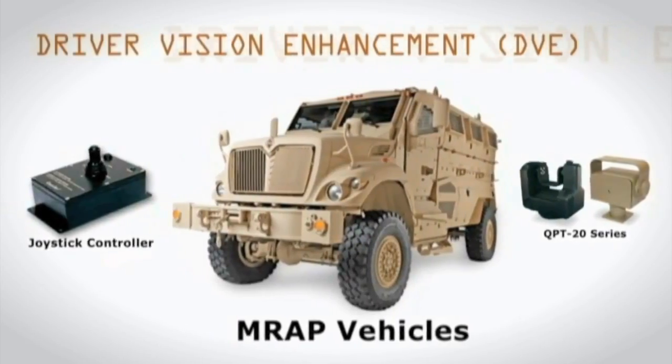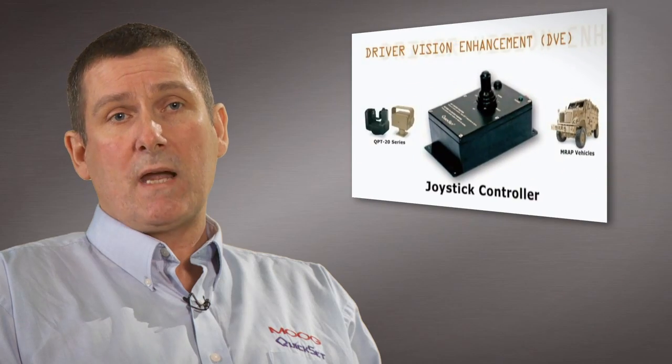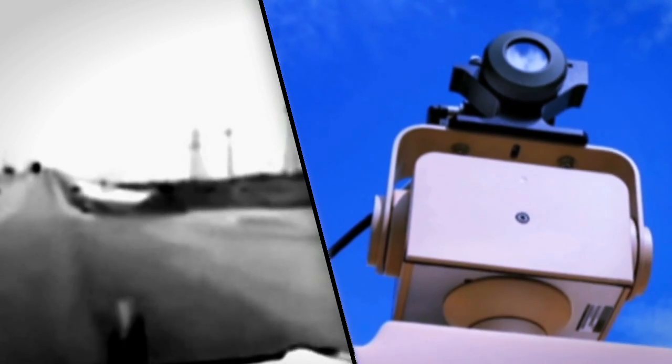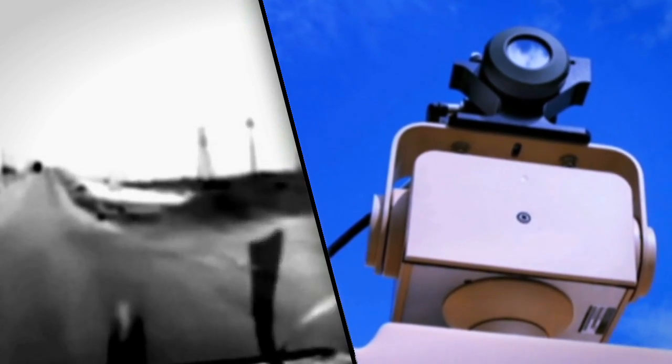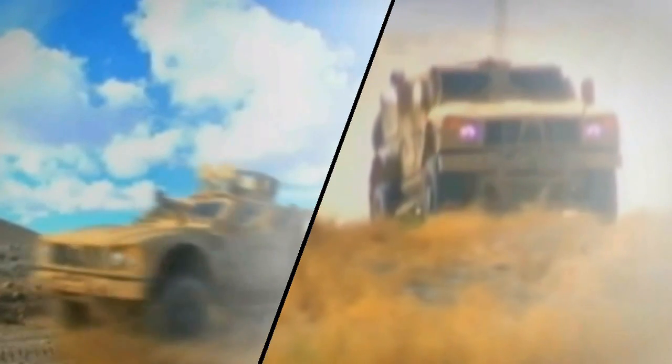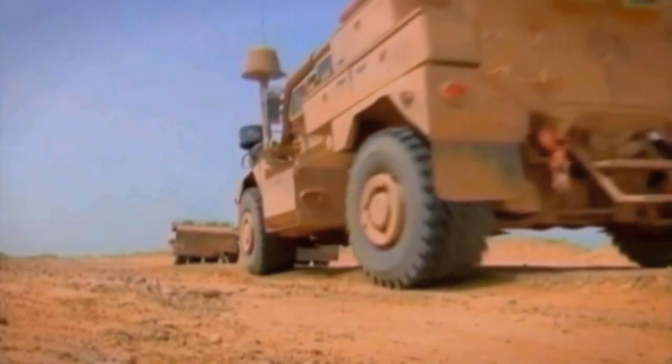One of our big programs is a driver's vision enhancement, and basically that takes a pan and tilt and a camera mounted on top of these vehicles. These vehicles have the ability of driving at night with no lights whatsoever, and that was to overcome some of the things that were happening in Afghanistan and Iraq. There are times when we actually receive product back from the military with bullet holes in them, which is significant because of the mere fact that we are saving lives.